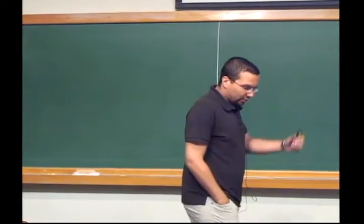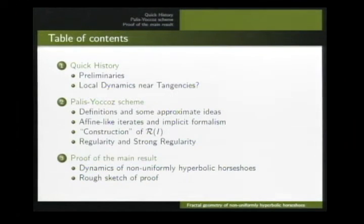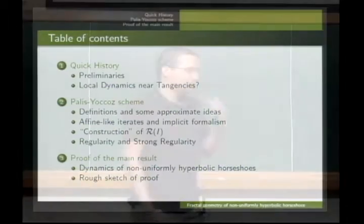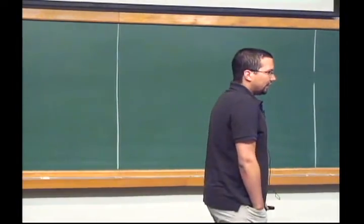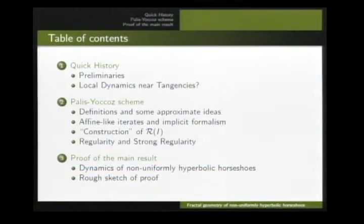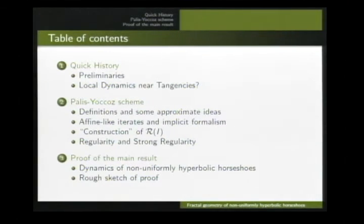So this is the table of contents. I'll give a historical review of the study of homoclinic bifurcations — a very quick review. Then I'll try to give a rough sketch of the so-called Palis-Yoccoz scheme for studying tangencies associated to slightly fat horseshoes, and then by the end, if I have time, I'll try to give some sketch of proof of some results we got together recently.